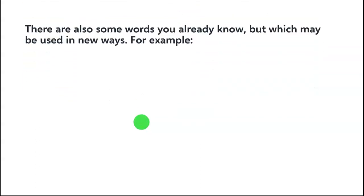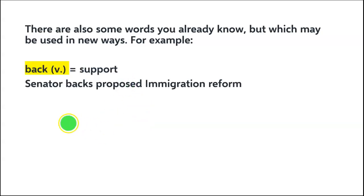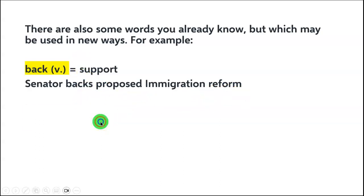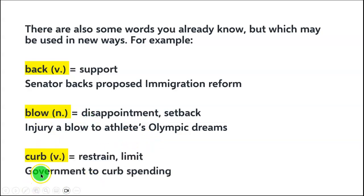There are also some words you already know which may be used in new ways in a newspaper. 'Back' is a verb meaning 'support' — for example: 'Senator backs proposed immigration reform.' 'Blow' is a noun meaning disappointment or setback — 'Injury a blow to athlete's Olympic dreams.' 'Curb' is a verb meaning to restrain or limit — 'Government to curb spending.'